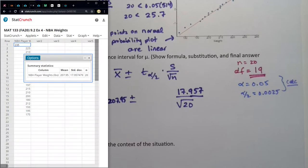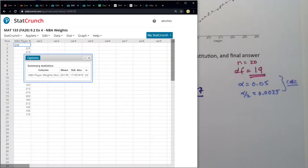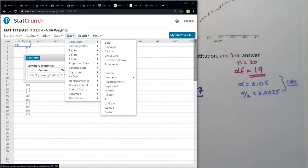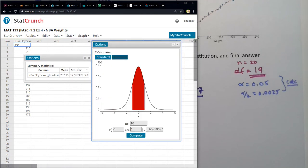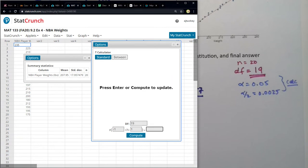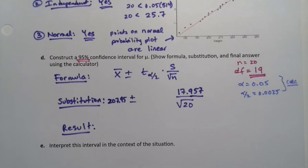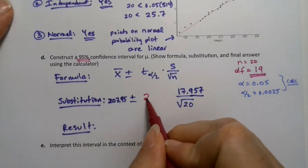Because StatCrunch, I can just go to Stat, Calculators, T right there. I'll say choose between. So I clicked on between. I tell it the degrees of freedom is 19, I tell it the area is 0.95. Enter. And there you have it. So T is 2.093. And again, it could be the negative or the positive, it doesn't matter because the formula takes care of it. So it's 2.093.